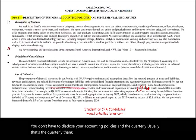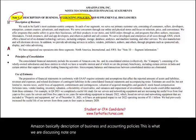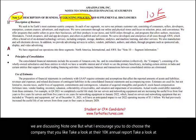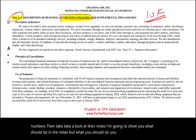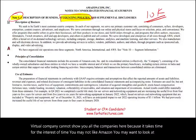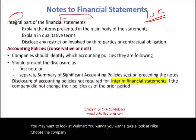Now I'm going to show you Amazon's description of business and accounting policies. What you should do is choose a company you like, take a look at their 10-K annual report, look at the numbers, and then look at their notes. You can look at Apple, Walmart, or Nike — choose the company you like and go over their notes.